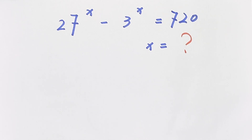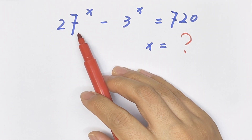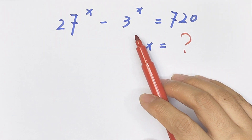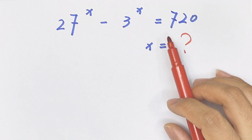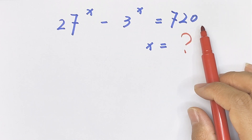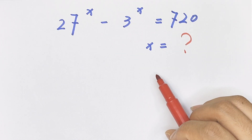Hello everyone, welcome to Math4U. How to solve 27 to the power of x minus 3 to the power of x equals 720, then find the value of x.